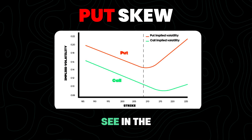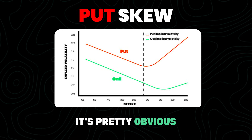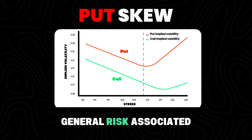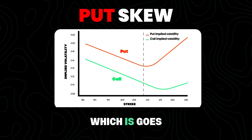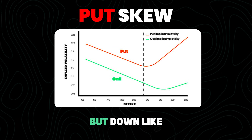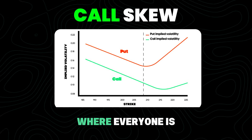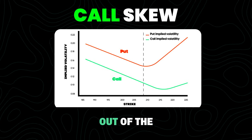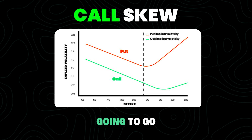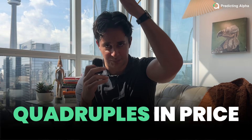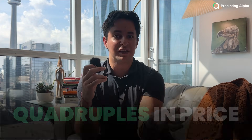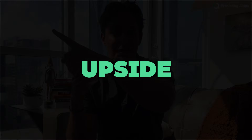For the put skew we see in the S&P, it's pretty obvious what drives that: the general risk associated with equities goes up like an escalator but down like an elevator. Call skew is something we see, for example, on a meme stock, where everyone is bidding up the out-of-the-money calls betting the stock is going to the moon. The risk with a meme stock is that it quadruples in price. More likely than not it's going to go down over time, but the risk is to the upside, and the skew informs us about that.